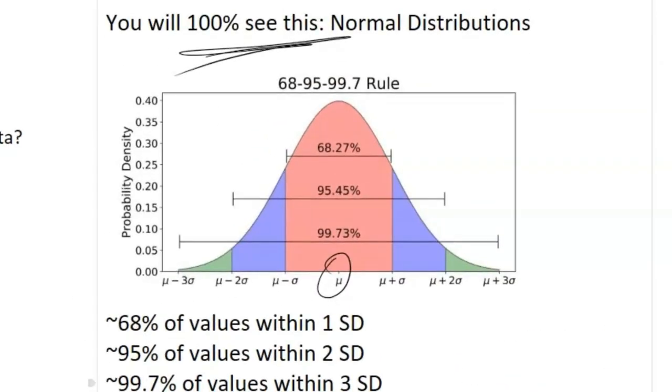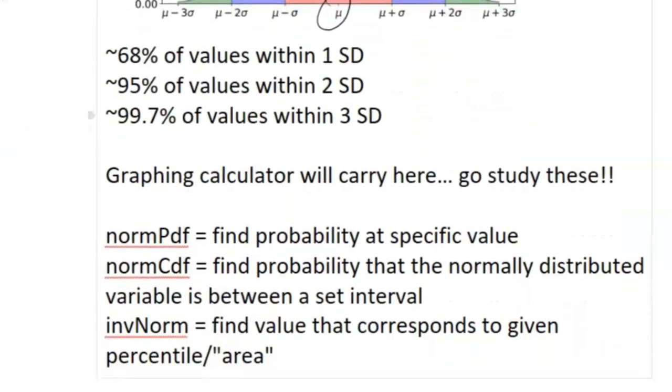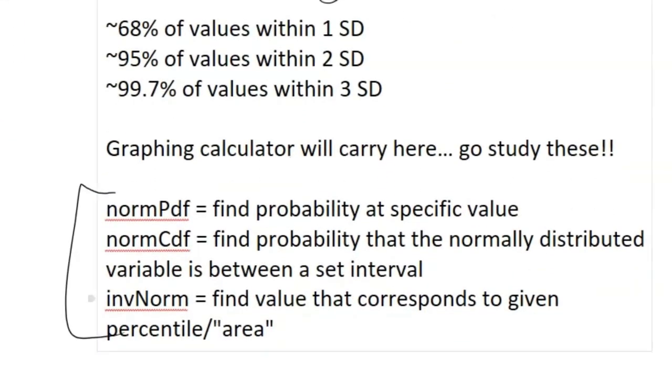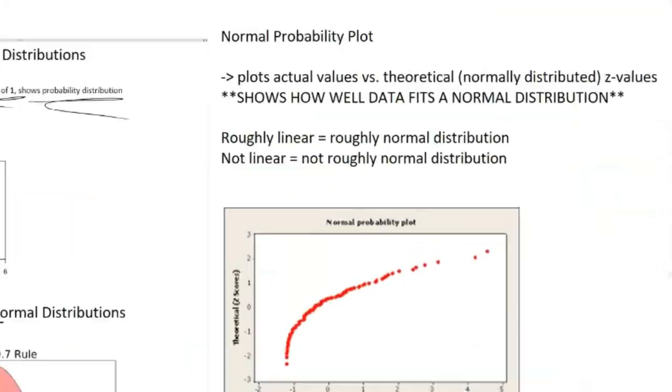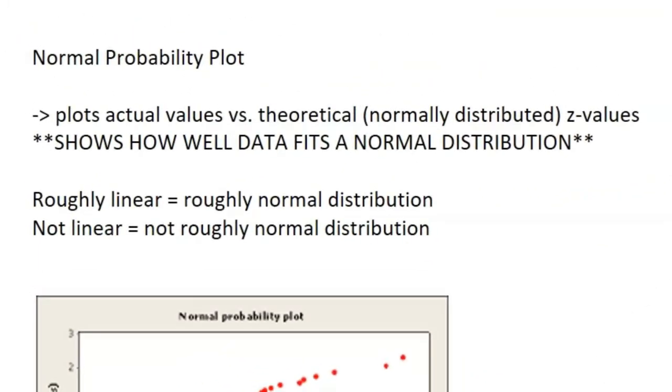To solve normal distribution problems, you're just going to use your calculator - that is the most simple way. Know your calculator commands, go and study those. Norm PDF finds the probability at a specific value. Norm CDF shows probability that the normally distributed variable is between a set interval, pretty similar to norm PDF. Then we have inverse normal, which pretty much does the reverse of these calculations - it finds the value that corresponds to a given percentile, where on your calculator it might be denoted as area.